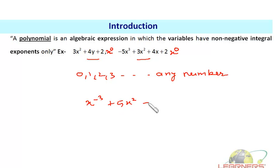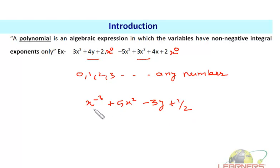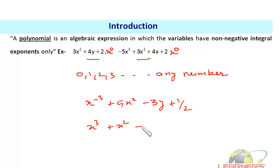Suppose I have the expression x⁻³ + 5x² − 3y + 1/2. We cannot call this a polynomial because x is carrying the power −3. In polynomials, the variable must carry non-negative integral exponents.